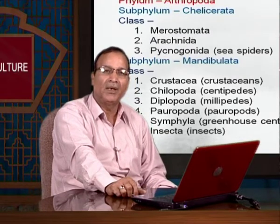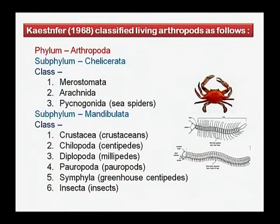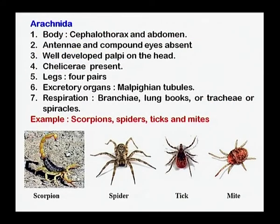The classification of Arthropoda: the phylum is divided into two subphyla, Chelicerata and Mandibulata. Chelicerata includes three classes whereas the subphylum Mandibulata includes six classes, and out of these, the class Insecta is one of the important classes. Besides Insecta, the important class under Chelicerata is Arachnida, where you will find the scorpions, spiders.